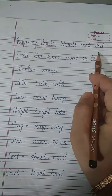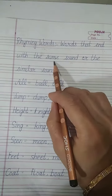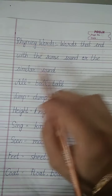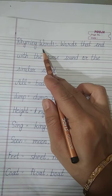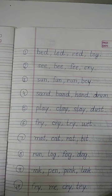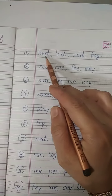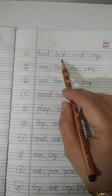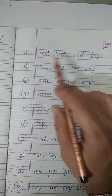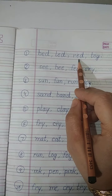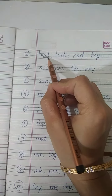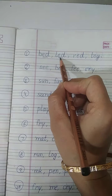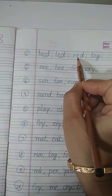The words that end with the same sound or a similar sound are the rhyming words. For example, bed, led, red. These three words are the rhyming words because they end with the similar or same sound: -ed, -ed, -ed.